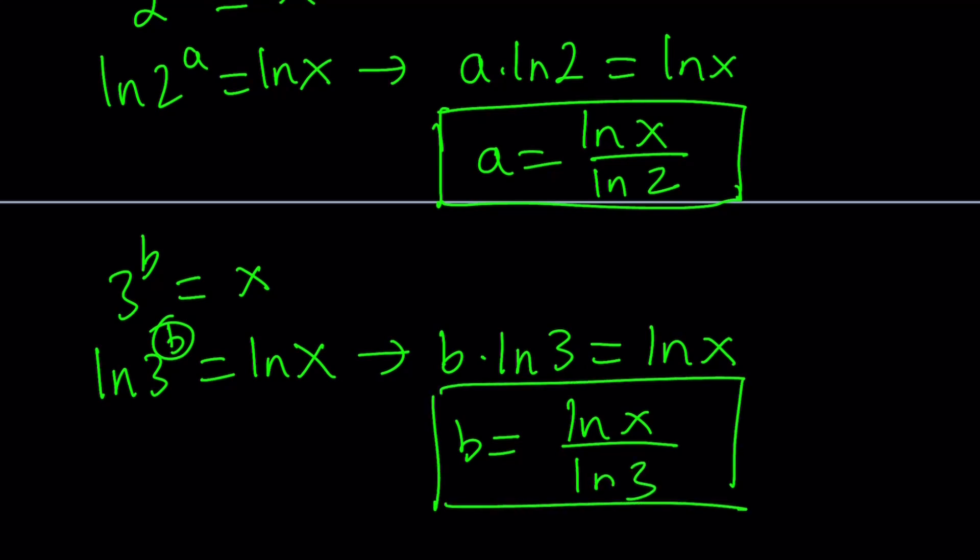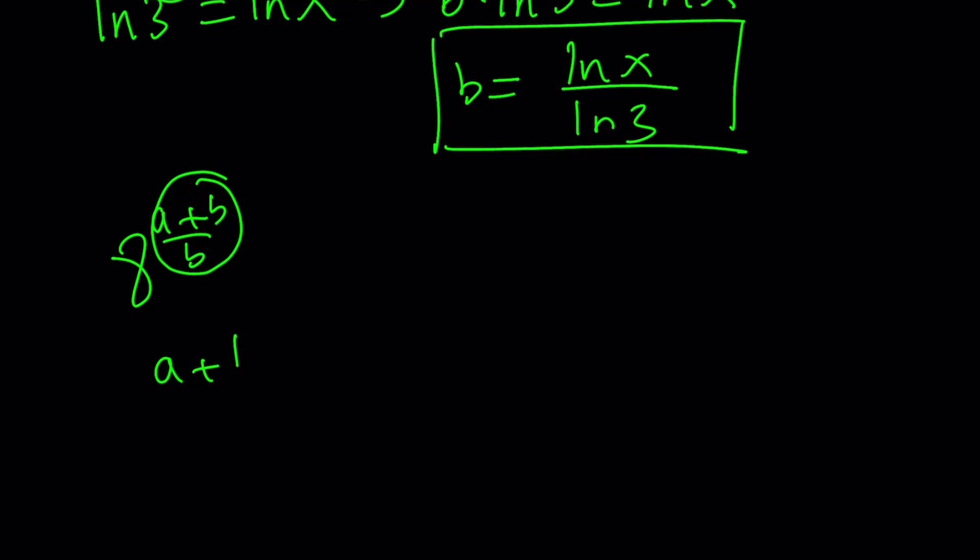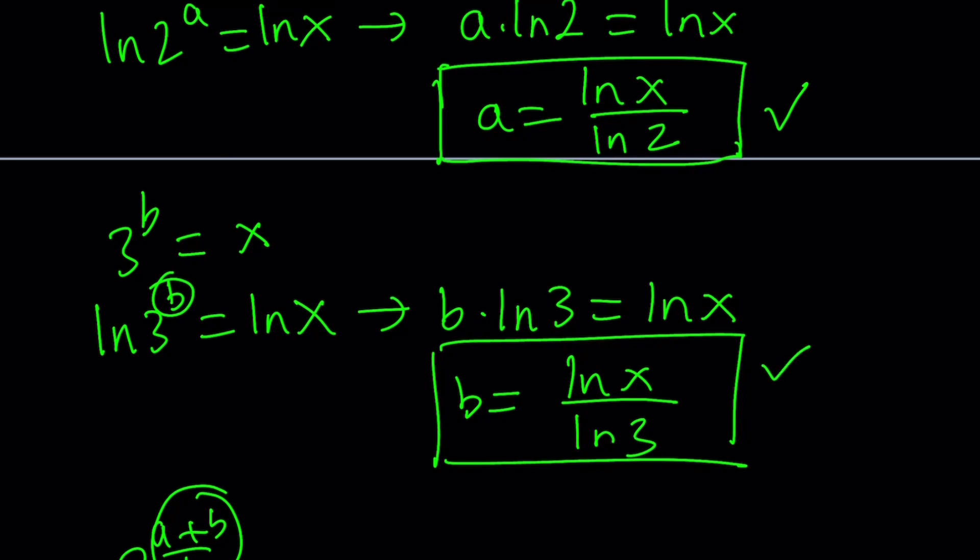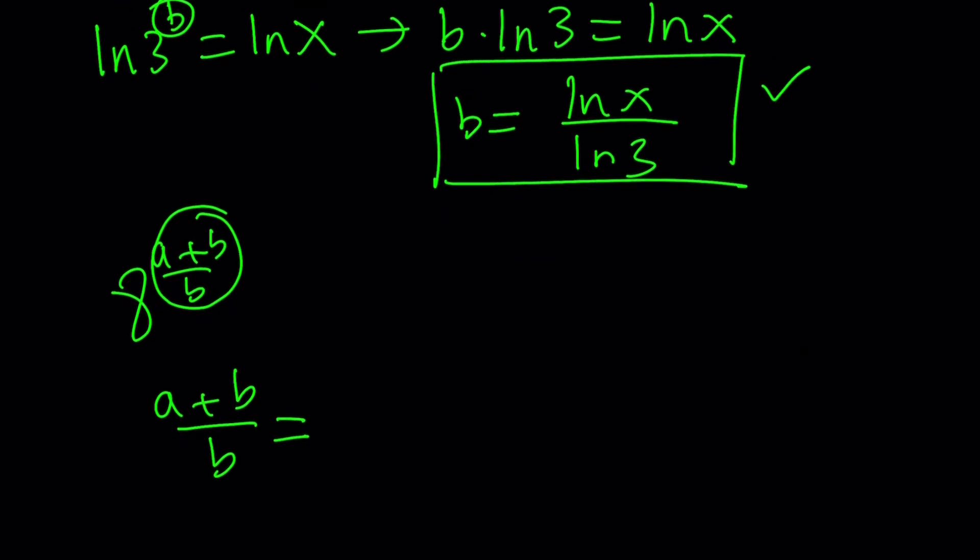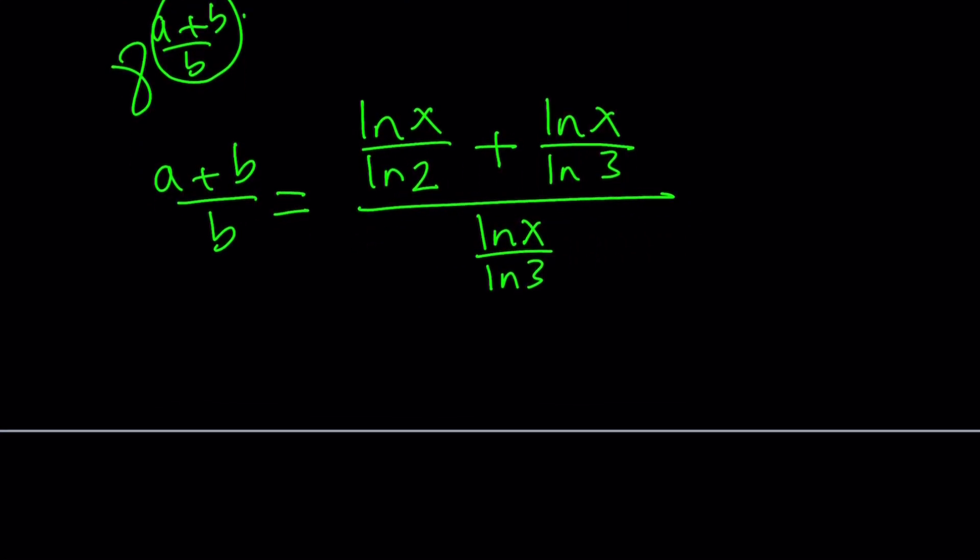So we got these two expressions for a and b. And remember, we're trying to evaluate 8 to the power a plus b over b. So let's evaluate the exponent first. What is a plus b over b? We were able to write a and b in terms of x, so let's plug them in. A will be replaced with ln x over ln 2, and b will be replaced with ln x over ln 3. And that will be divided by b again, ln x over ln 3. Let's simplify this and then use it as an exponent.